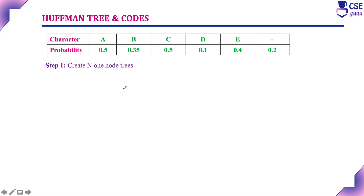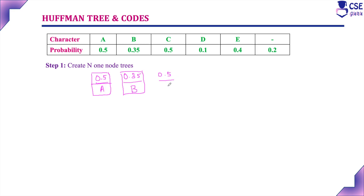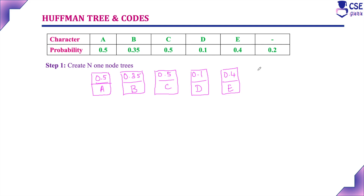For this problem, in step one, we construct N one-node trees. For character A, we place the probability first, then the character. For A it is 0.5, B is 0.35, C is 0.5, D is 0.1. For hyphen, probability is 0.2. Now we have constructed N one-node trees.